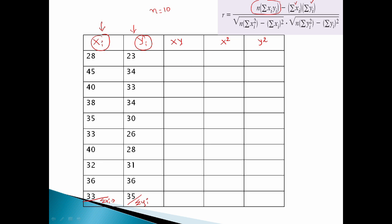First value is xy. The x value is 28, the y value is 23. So 28 into 23 equals 644. Next, x squared: 28 squared is 784. Next, y squared: y is 23, so y squared is 529.